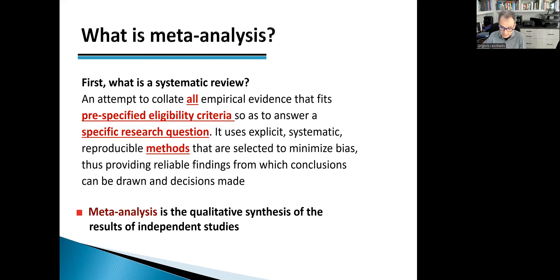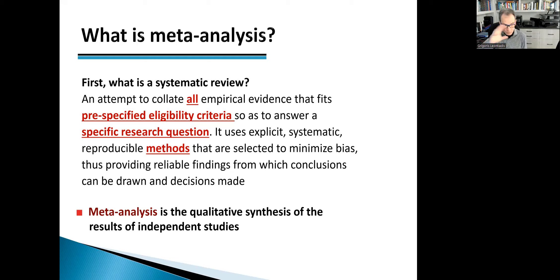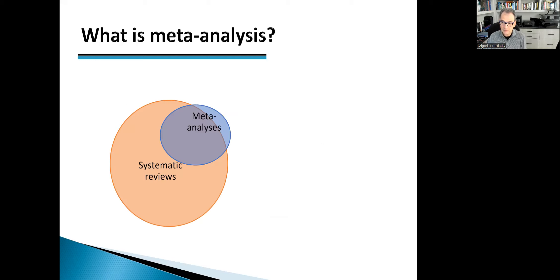Meta-analysis is the quantitative synthesis of the results of the individual studies. It's a mathematical approach to produce the summary estimate — a number. For example, this treatment is 2.5 times better than the other treatment, putting all the studies together. That is a meta-analysis.